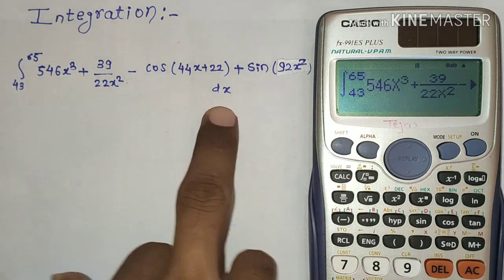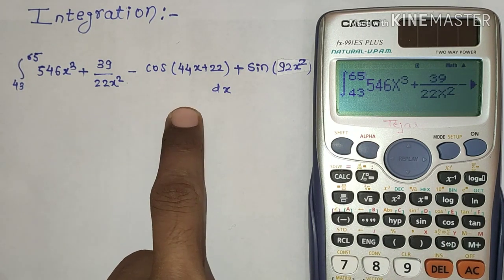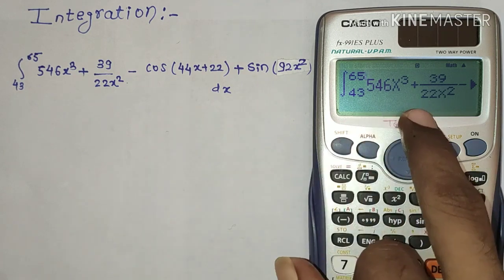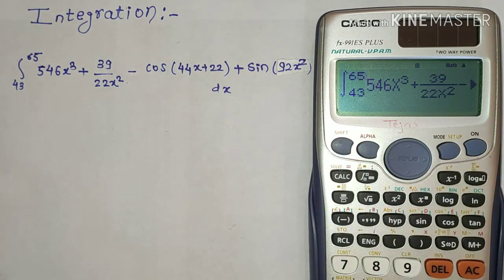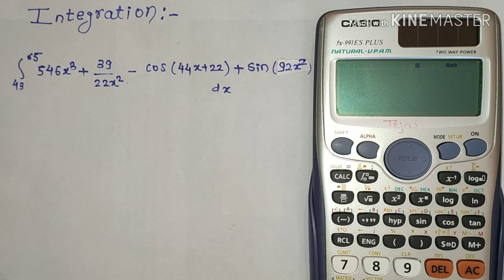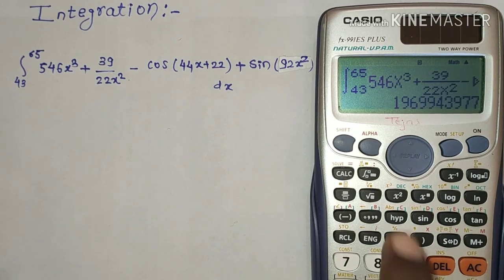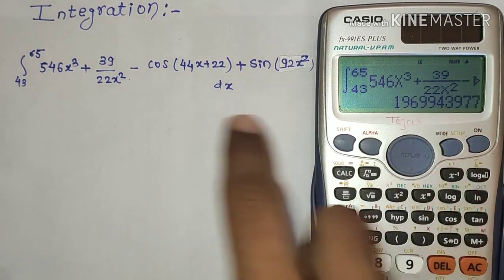Now once we put all the values or the equation in the integrated format, just press the equal to button. So wait for a while and the calculator will give you the final result. Here we got the final result for our integration.